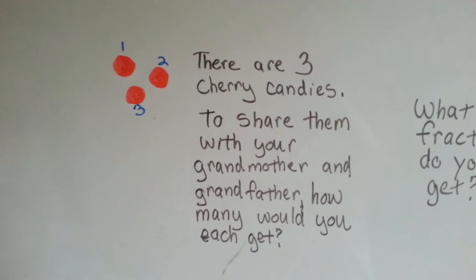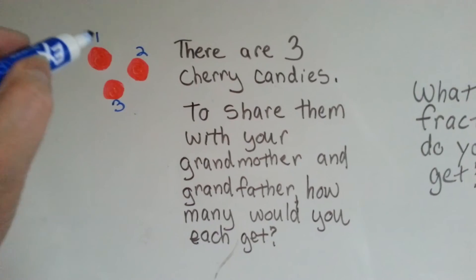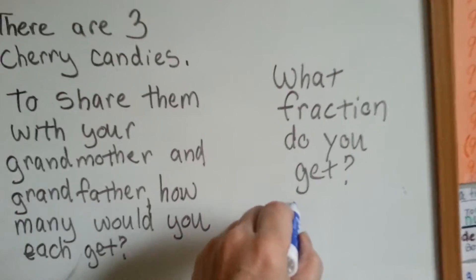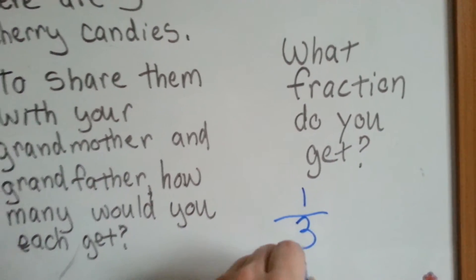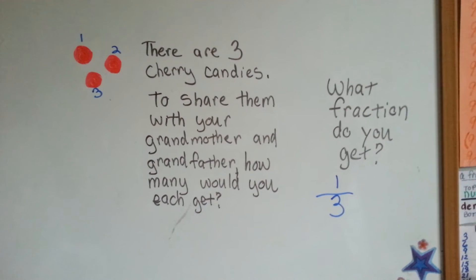Nobody got more than the other person. Now, if you only got one of them, what fraction did you get? You got one of the three. You got one third of the candies. One third.